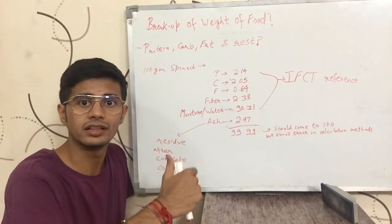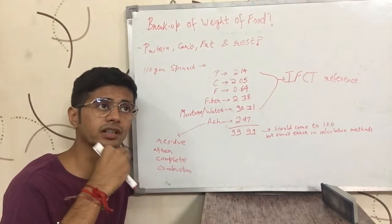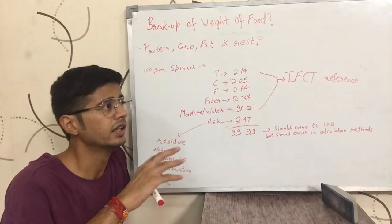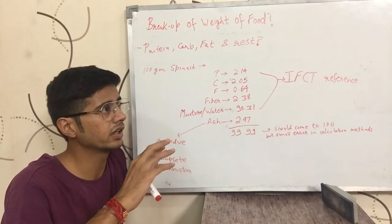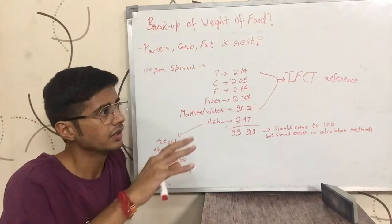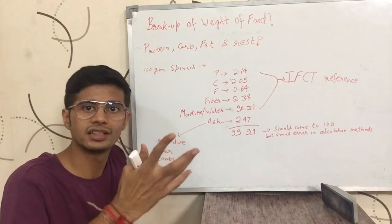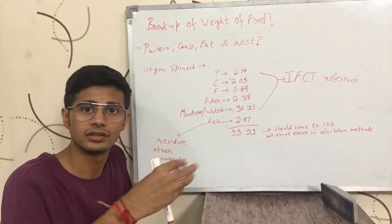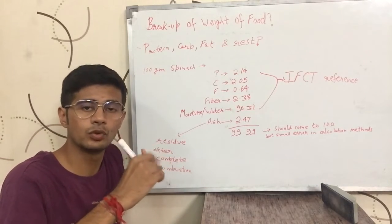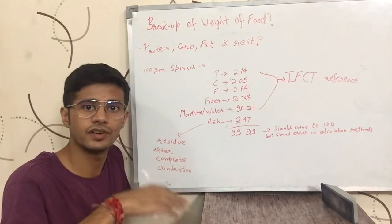I used to get really confused when I would look at nutrition information of anything and see: this is 100 grams of food and it has 5 grams protein, 12 grams carbohydrate and 3 grams fat — where is the rest of the food's weight? The answer is that the food does not have weight only from protein, carbohydrates and fats.